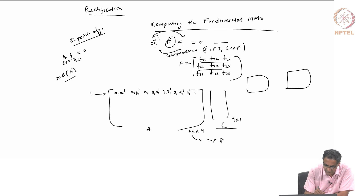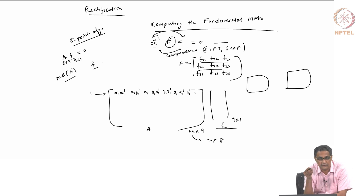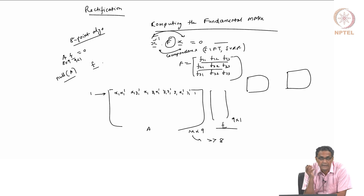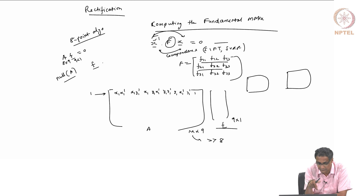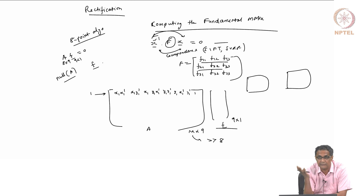The null of A gives you F, and it will exactly satisfy A·f = 0 because A has only rank 8. That F is only known up to a scale factor, but it need not have rank 2. We have not automatically enforced rank 2 on it, whereas we know the fundamental matrix must have rank 2.